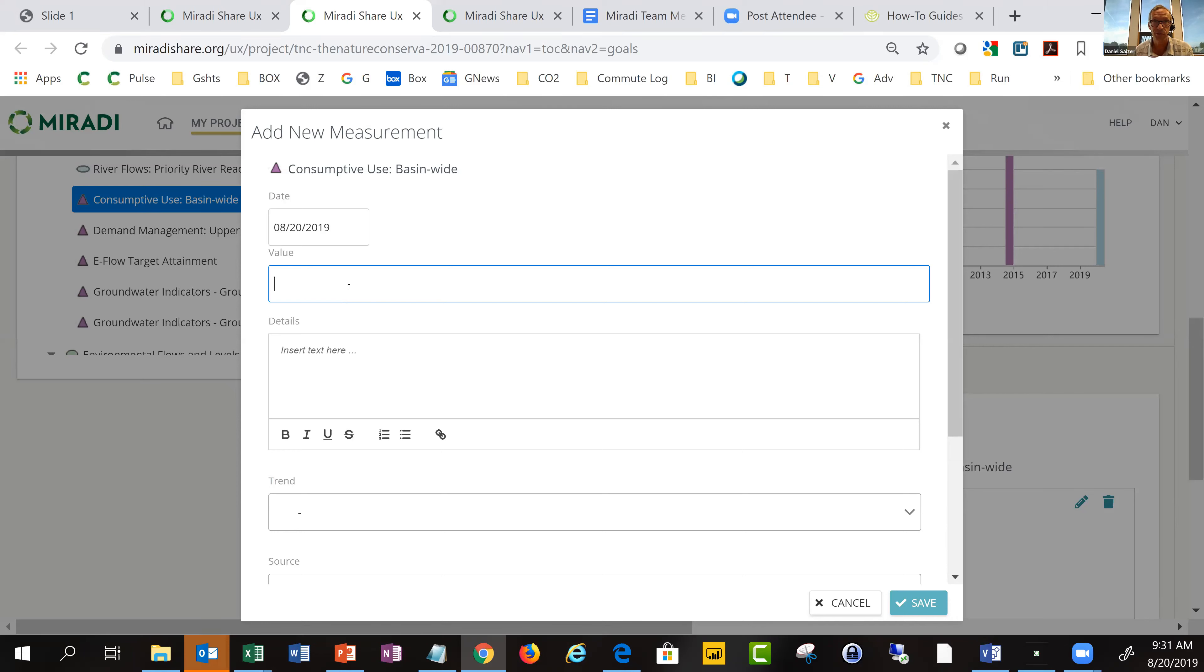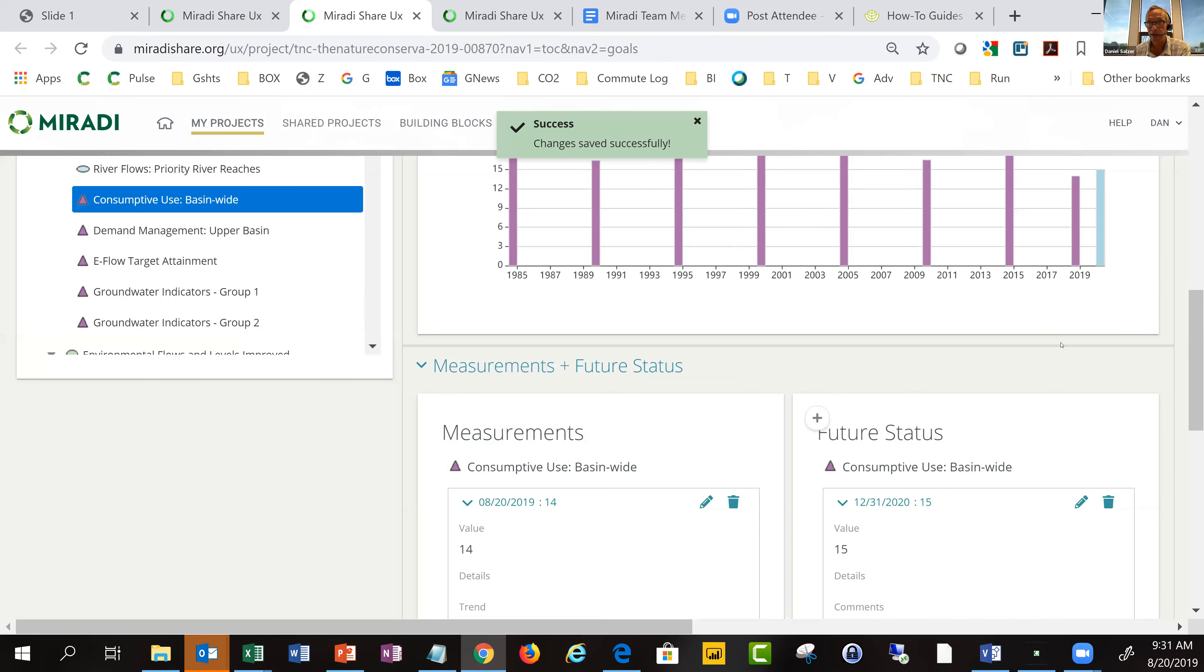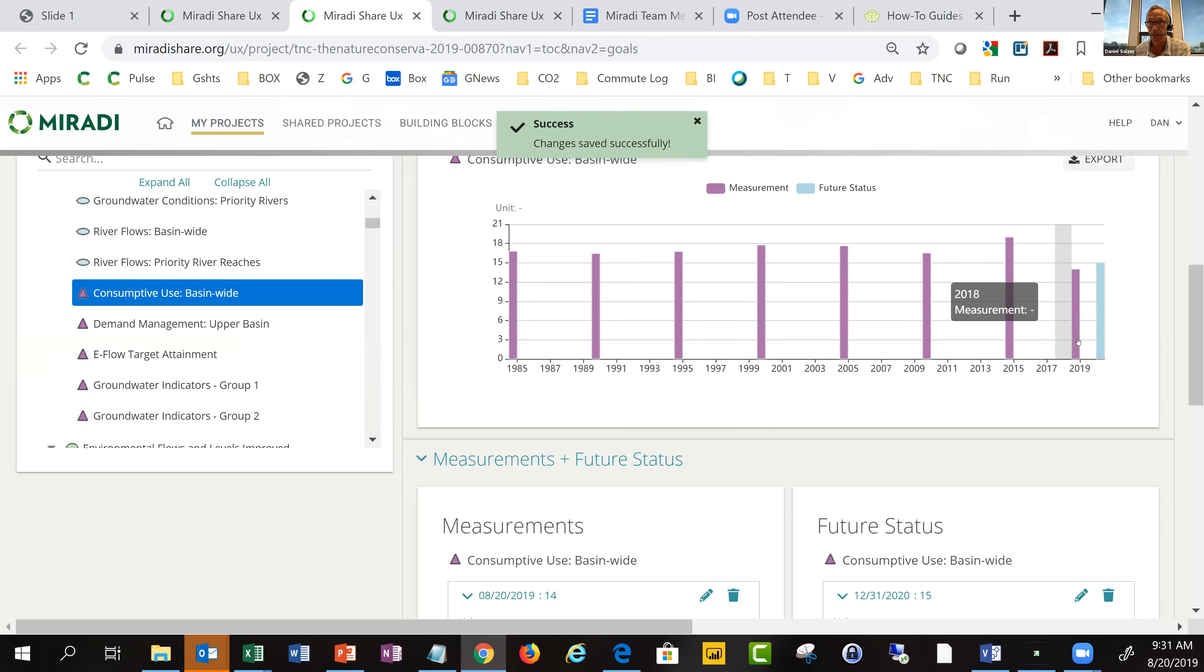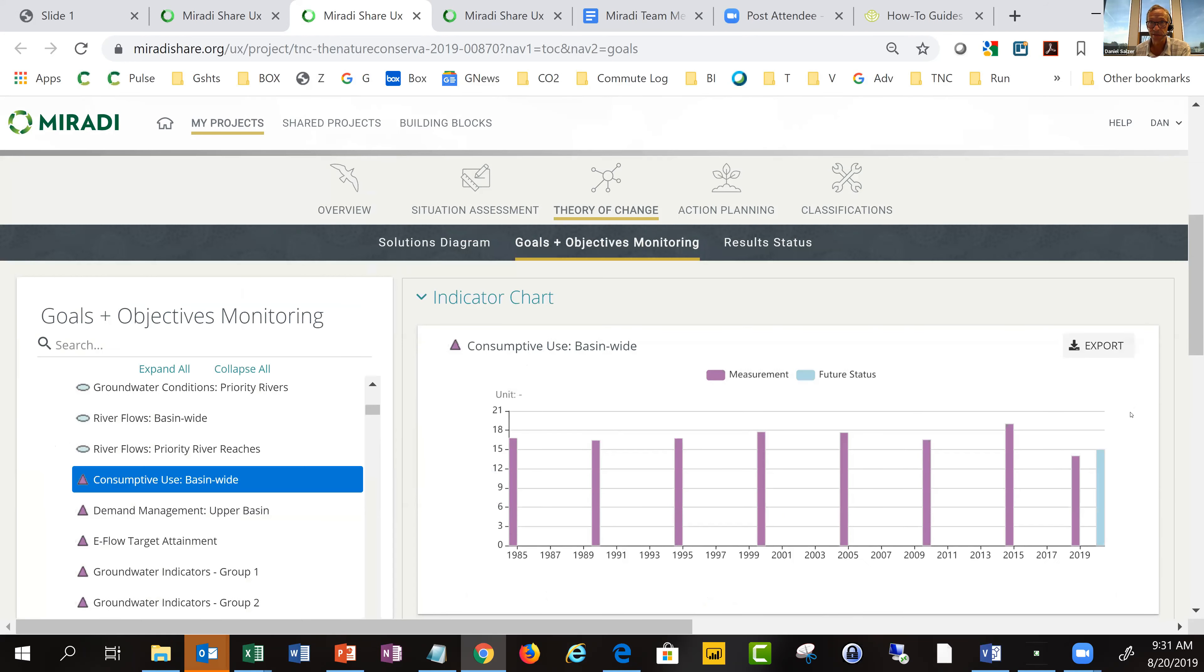Let's say the project team had come up with data from this year. I can come in and click on the plus. We'll just use today's date. Let's say we got this down to 14. I can click on that. You'll see that new value is instantly displayed on this dashboard or graphic up here.